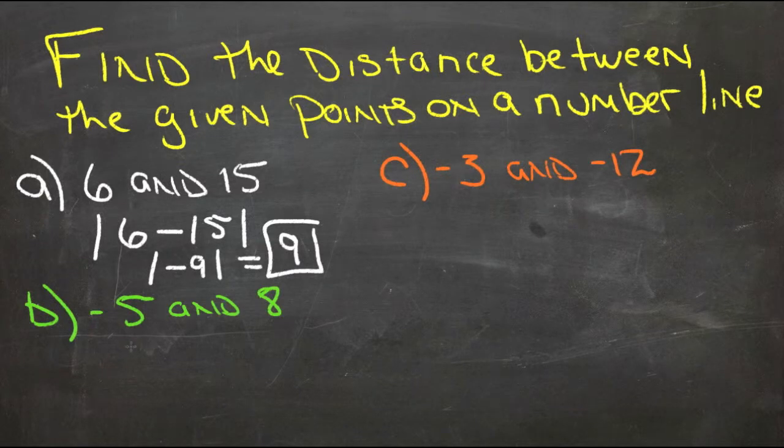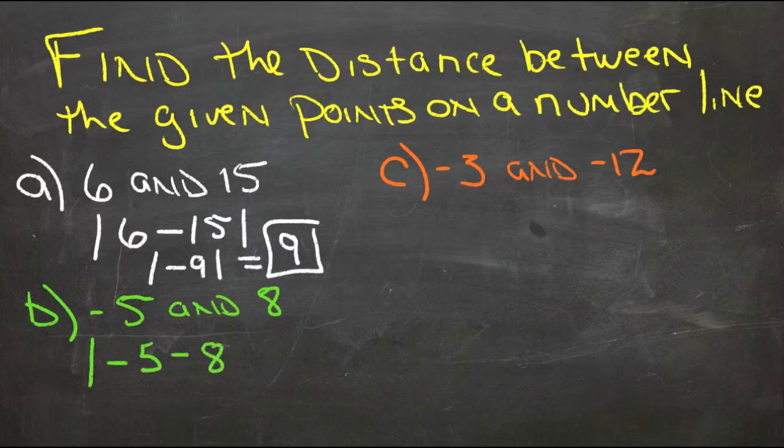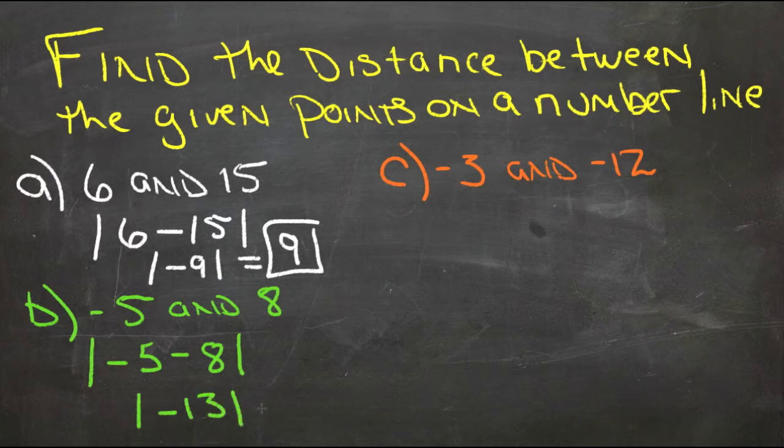Now we have negative 5 and 8, so we have the absolute value of negative 5 minus 8, the difference between negative 5 and 8. That gives us the absolute value of negative 13, and the absolute value of negative 13 is 13.